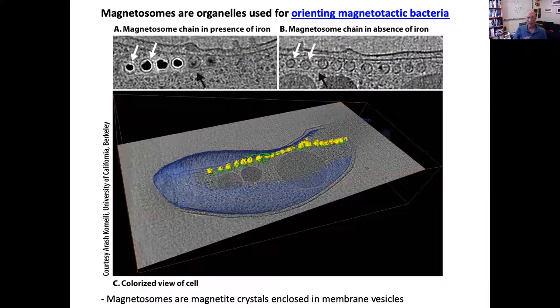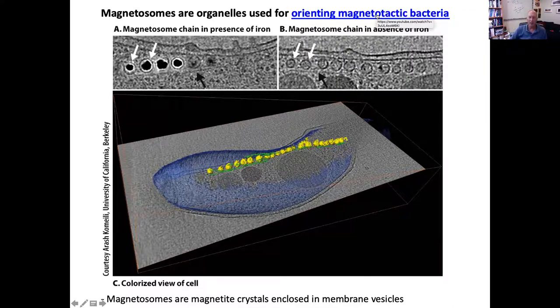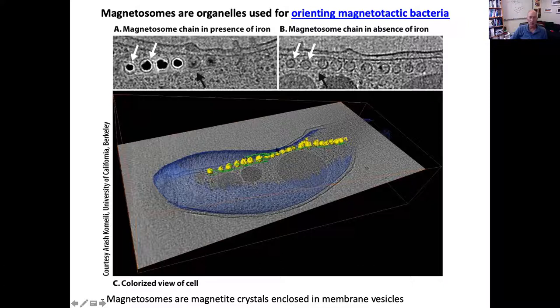Magnetosomes are a really cool kind of organelle that are also very specialized, and they're only found in magnetotactic bacteria. Magnetotactic bacteria are bacteria that orient themselves in a magnetic field, and they do this using this chain of magnetite crystals. Now these crystals are actually enclosed in membrane vesicles. So this is a rare example of a membrane-bound organelle in a bacterial cell.